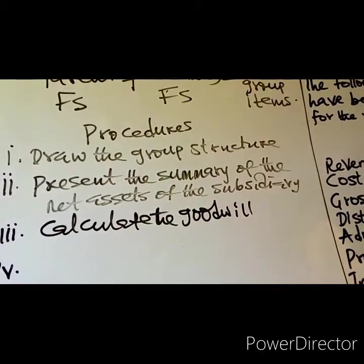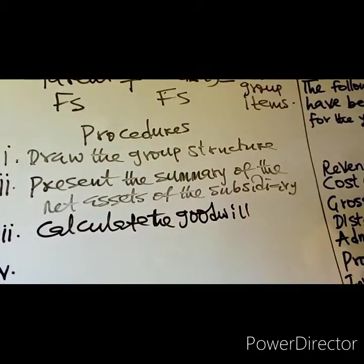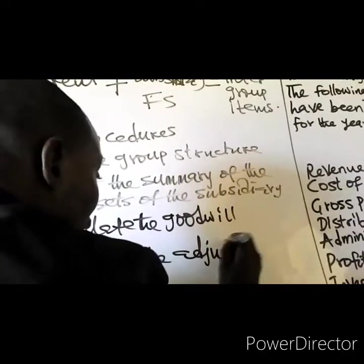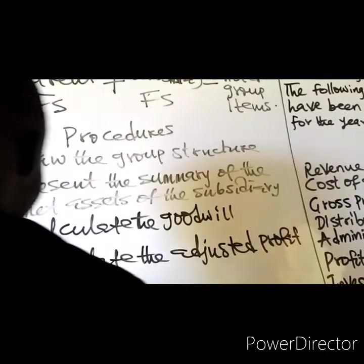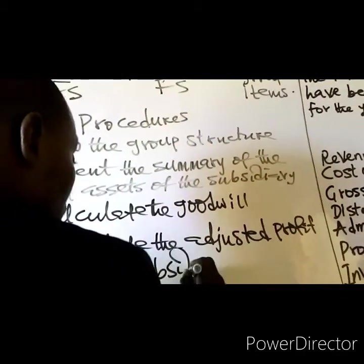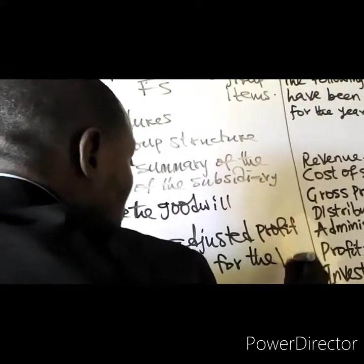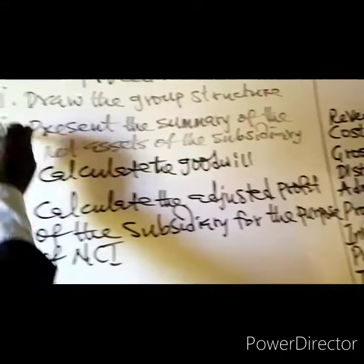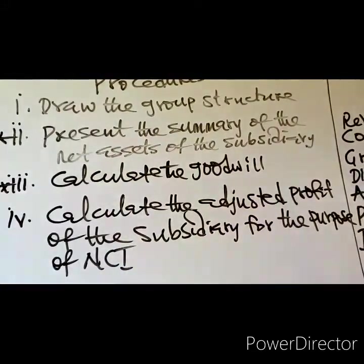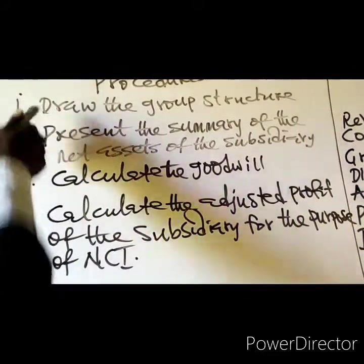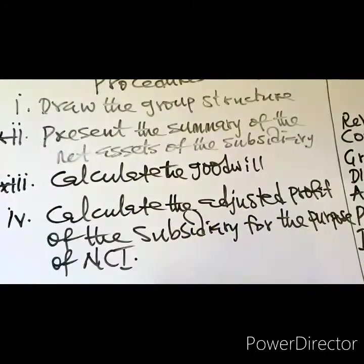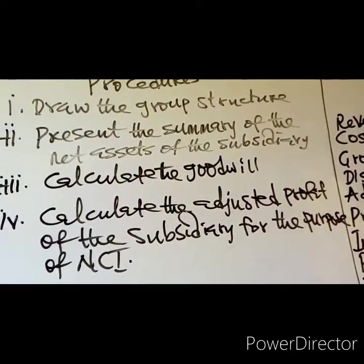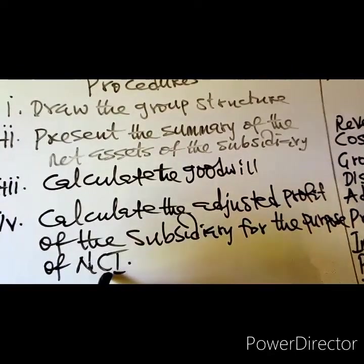Step four: calculate the adjusted profit of the subsidiary for the purpose of NCI — non-controlling interest. Steps two and three may not be necessary, but steps one and four are a must. You must have these two steps.